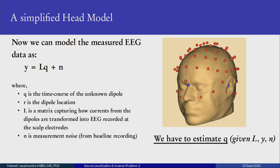Once we have this, we can model the measured EEG as: Y = LQ + N, where Q is the time course of the unknown dipole, R is the dipole location, L is a matrix capturing how the currents from the dipoles are transformed into EEG recorded with the scalp electrodes, and N is the measurement noise from baseline recording. Essentially, we have to estimate Q given L, Y, and N.